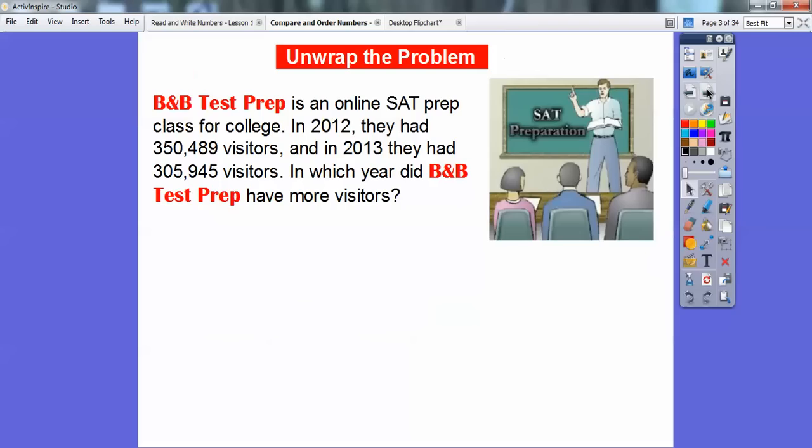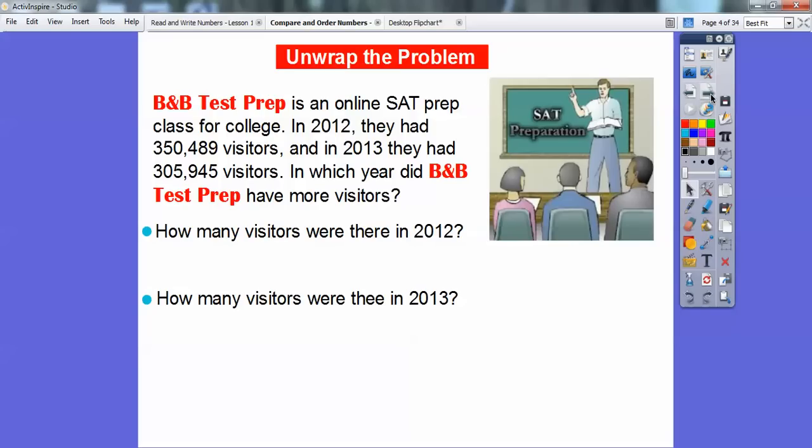Here's a problem: B&B Test Prep is an online SAT prep class for college. In 2012 they had 350,489 visitors, and in 2013 they had 305,945 visitors. In which year did B&B Test Prep have more visitors? Let's ask a couple of questions. How many visitors were there in 2012? 350,489. In 2013 there were 305,945. The question is asking in which year did B&B Test Prep have more visitors, so we're going to compare these two numbers.